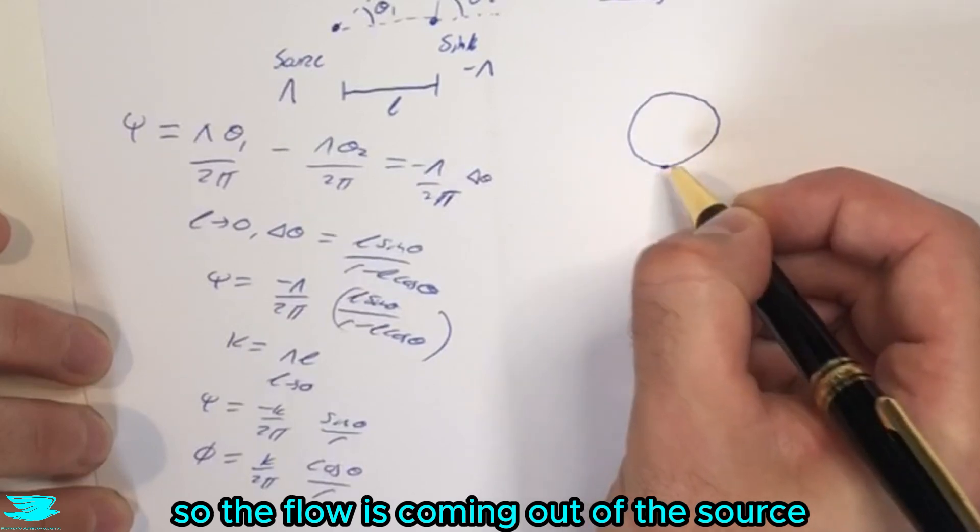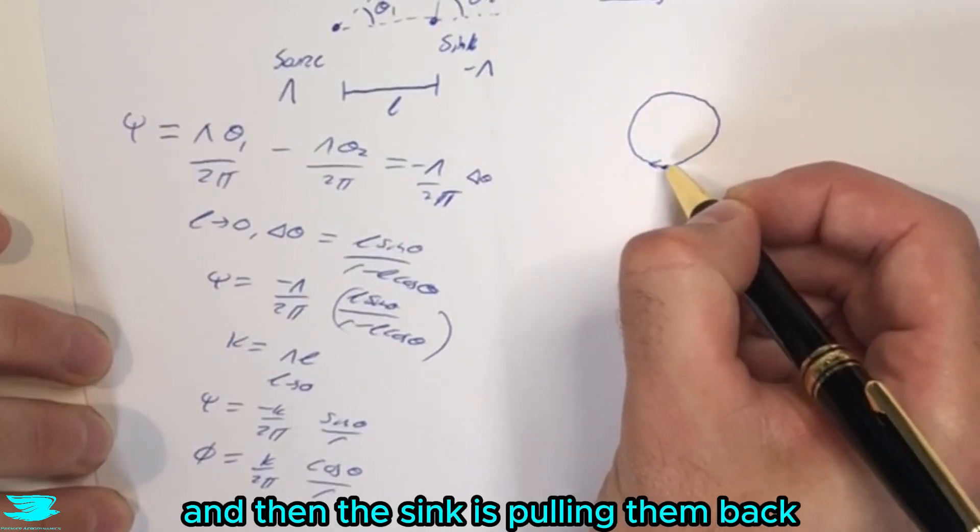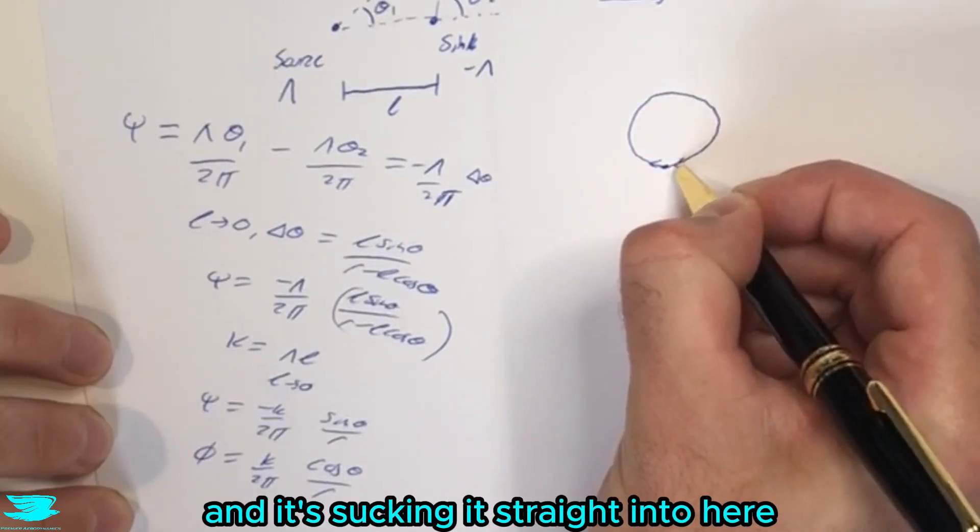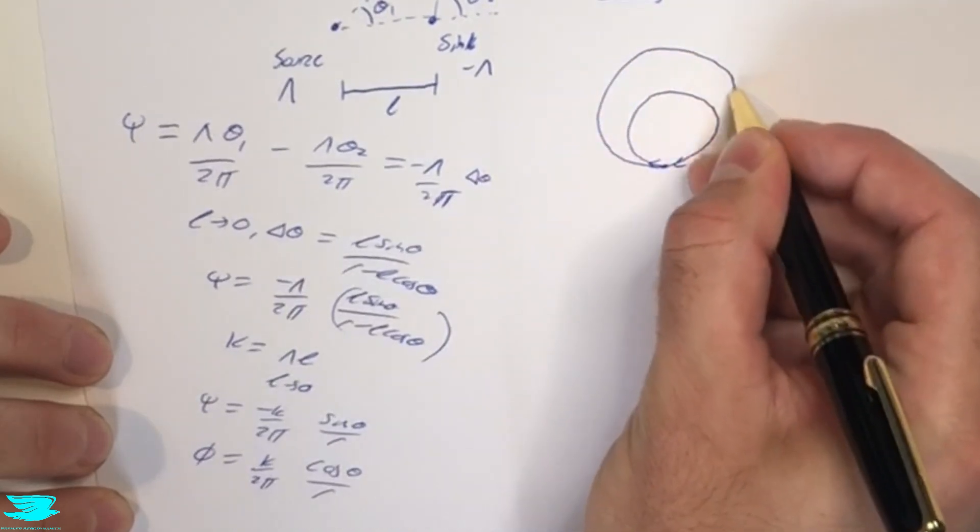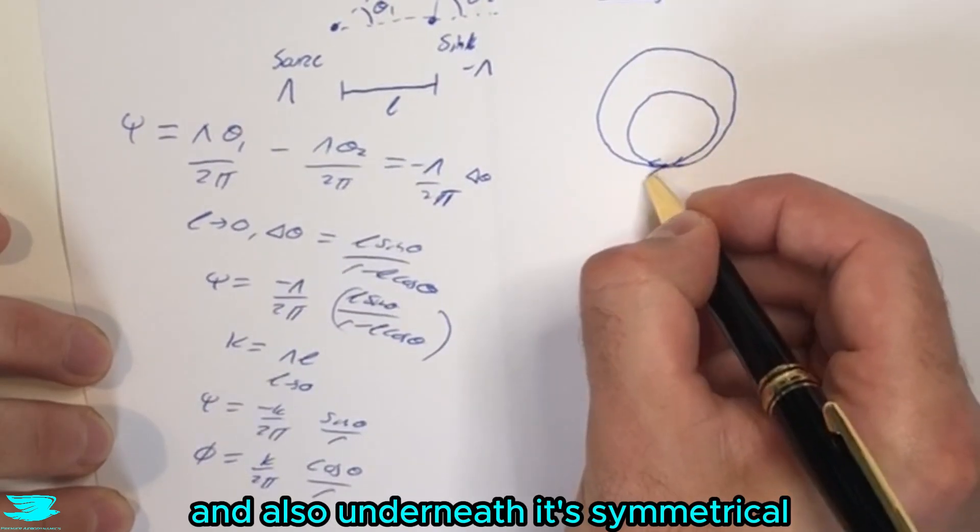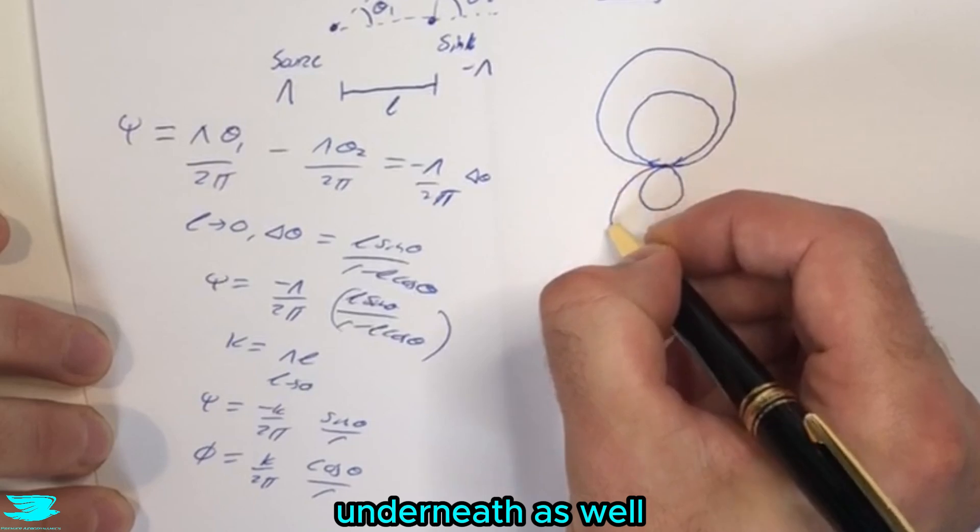The flow is coming out of the source and it's coming out here, for example, and then the sink is pulling it back and it's sucking it straight into here. And the same thing happens here where it's coming along here. And also underneath, it's symmetrical underneath as well.